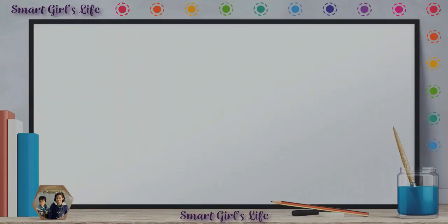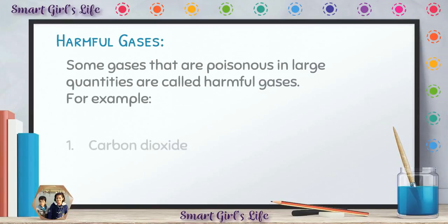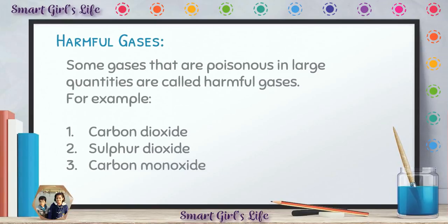Then we have the harmful gases. We have learned that carbon dioxide, oxygen, nitrogen, and other gases are important. Now we will learn about harmful gases. Some gases can poison you if they are present in large quantities. For example, carbon dioxide is also a harmful gas. We have learned it is very important, but it is also harmful in very large quantities. It doesn't poison you in small quantities, but it does in large quantities.